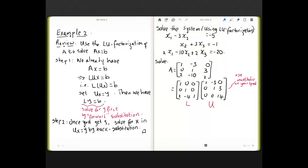Solve the following system of linear equations using LU factorization of the coefficient matrix A. This is the system. A is the matrix given by 1, negative 3, 0; 0, 1, 3; 2, negative 10, 2. We get the LU factorization of A. You can either do this manually as we did in example 1 or you can use Math Studio on your iPad and get the LU decomposition of the matrix A. This is our L and this is our U. How do we use the LU factorization to solve for X, i.e., X_1, X_2, X_3?